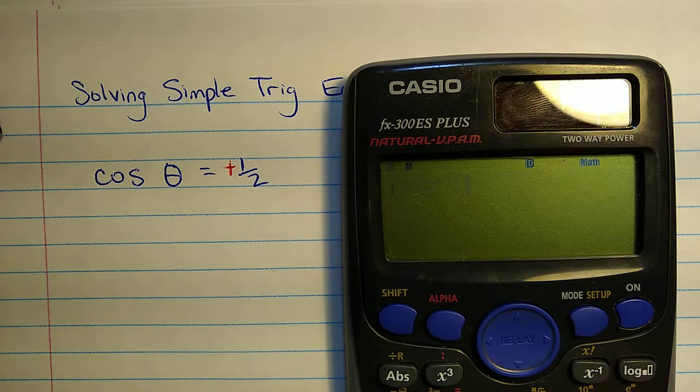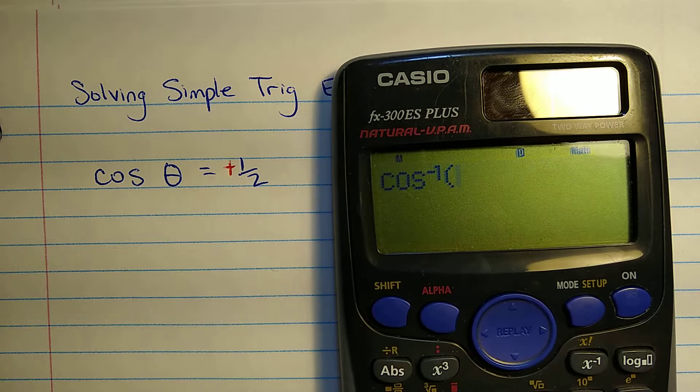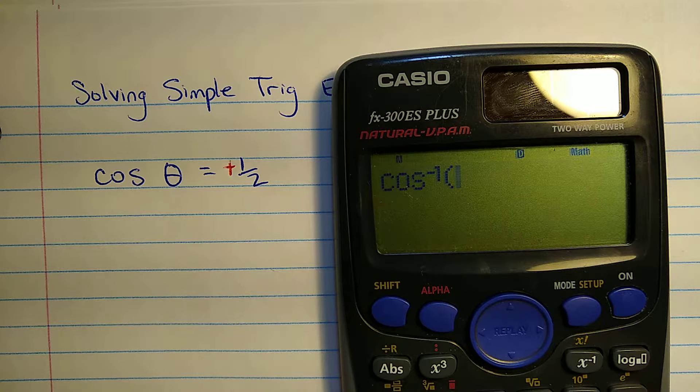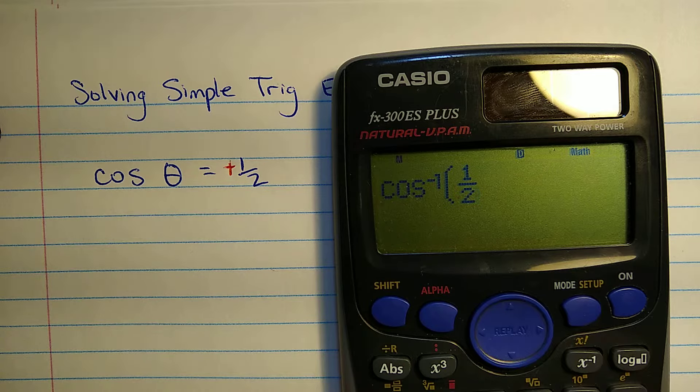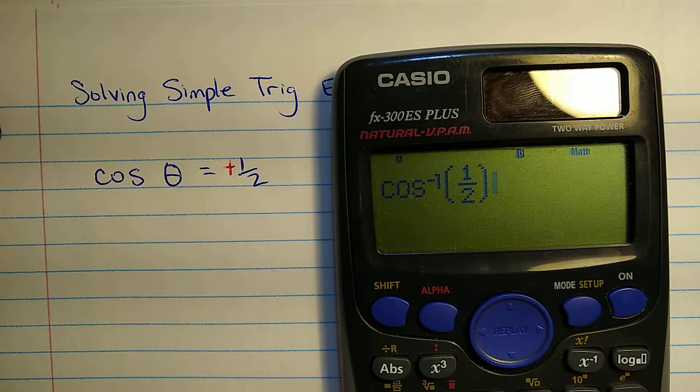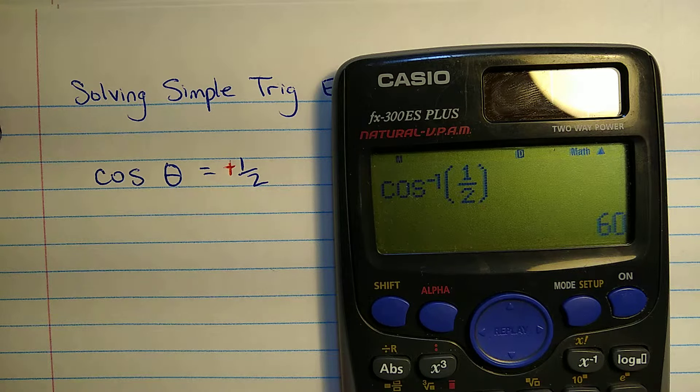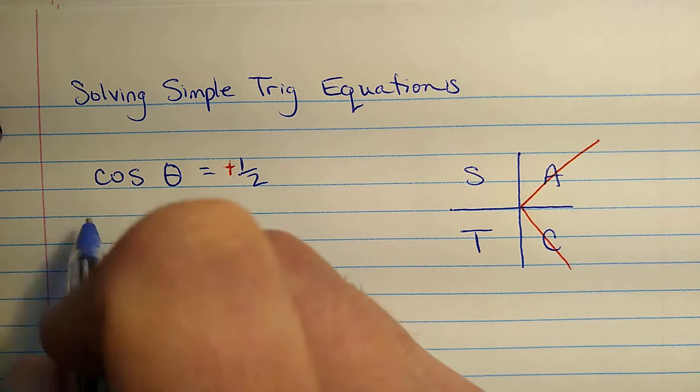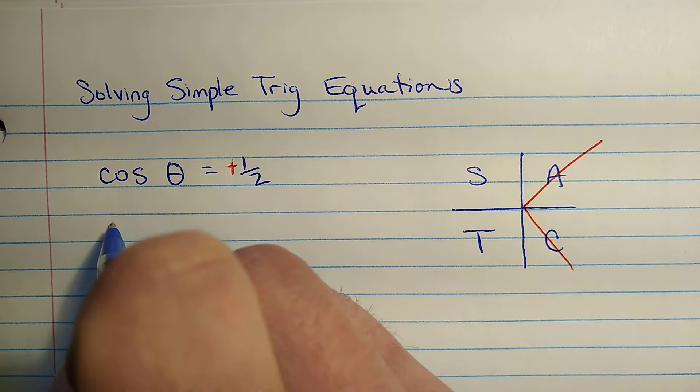So what we'll do is we'll use the cosine inverse function on the calculator, and we'll put in one half. You can put in the fraction, or you can put in the number 0.5. And I get 60, and this is in degrees right now, so 60 degrees. I'm just going to write it like this. Notice I'm not going to write theta equals,